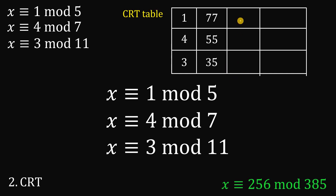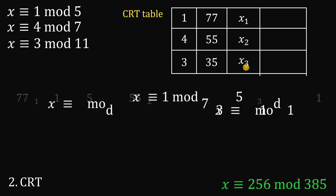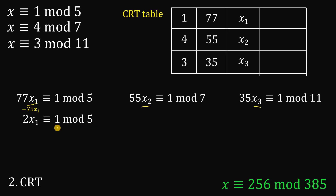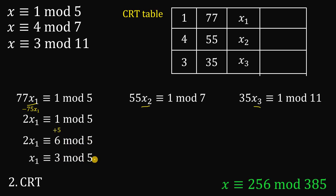Now for the third column, we need x₁, x₂, and x₃ — the modular inverses. x₁ is a number such that 77 times x₁ is congruent to 1 mod 5. Subtract a multiple of 5 on the left — subtract 75x₁ — giving 2x₁ is congruent to 1 mod 5. Add 5 to the remainder: 2x₁ is congruent to 6 mod 5. Divide by 2: x₁ is congruent to 3 mod 5. So x₁ equals 3.